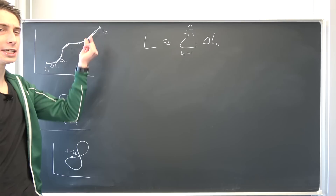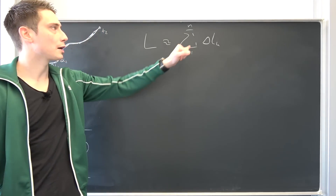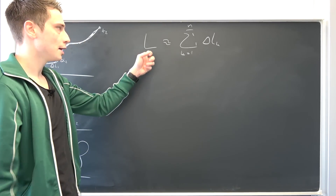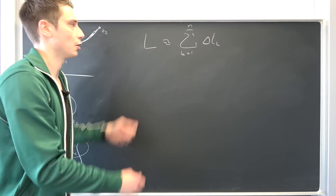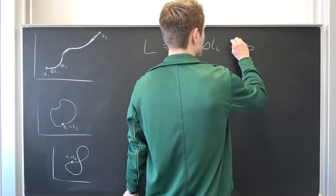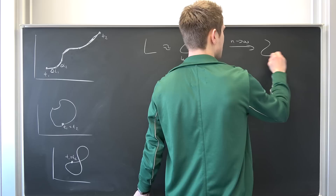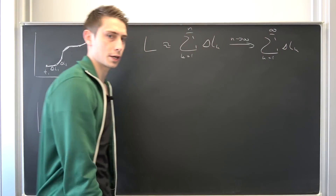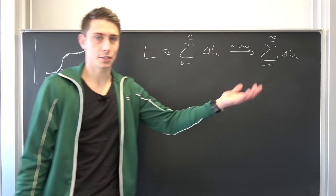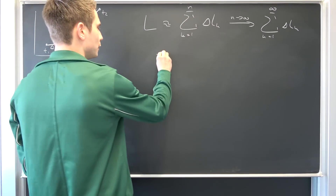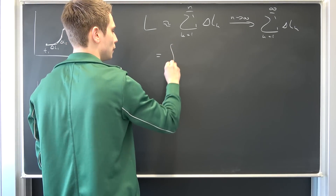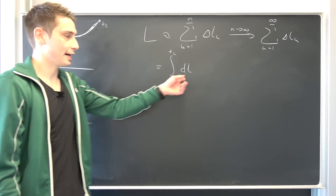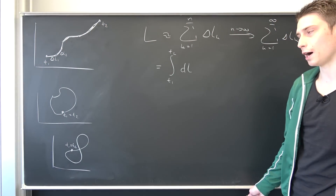We want to make this partition as fine as possible, meaning we are going to take n as it approaches infinity. We are going to sum up infinitely many small line segments to get a pretty good approximation of L. For n to infinity, we are going to get a sum running from k equals 1 to infinity of our delta Lk's. And this thing right here is just a Riemann sum definition — that's just an integral from our endpoints T1 to T2 of dL. And this right here is already a formula for the arc length, but it doesn't make too much sense at the moment.